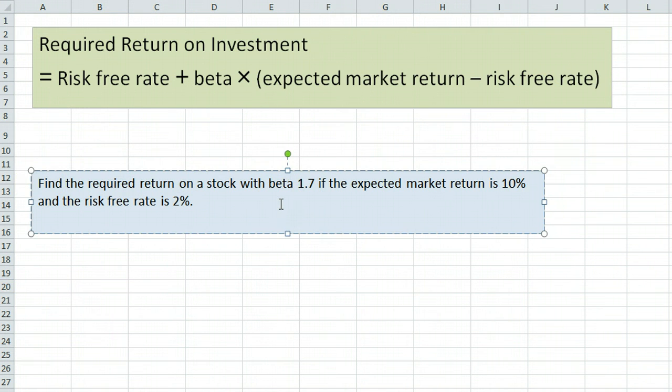It's probably the best way to show how this is done. Find the required return on a stock with a beta of 1.7 if the expected market return is 10% and the risk-free rate is 2%. A couple things that might pop up.